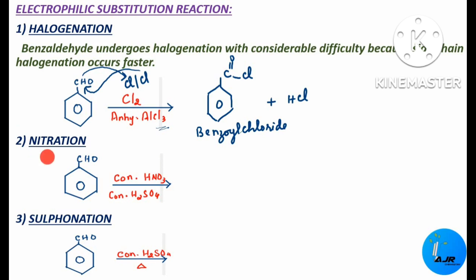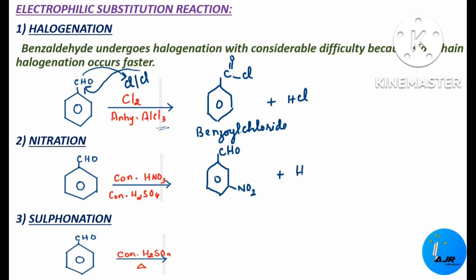During nitration, benzaldehyde reacts with concentrated nitric acid in the presence of concentrated sulfuric acid and we get metanitrobenzaldehyde. The NO2 group gets added to the meta position because CHO is meta-directing.